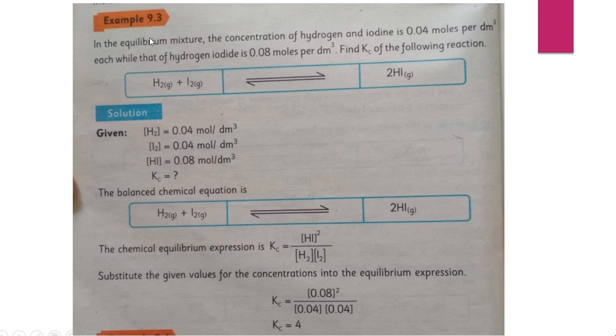This is an example through which you can understand how to calculate value of Kc. In the equilibrium mixture, the concentration of hydrogen and iodine is 0.04 moles per decimeter cube.